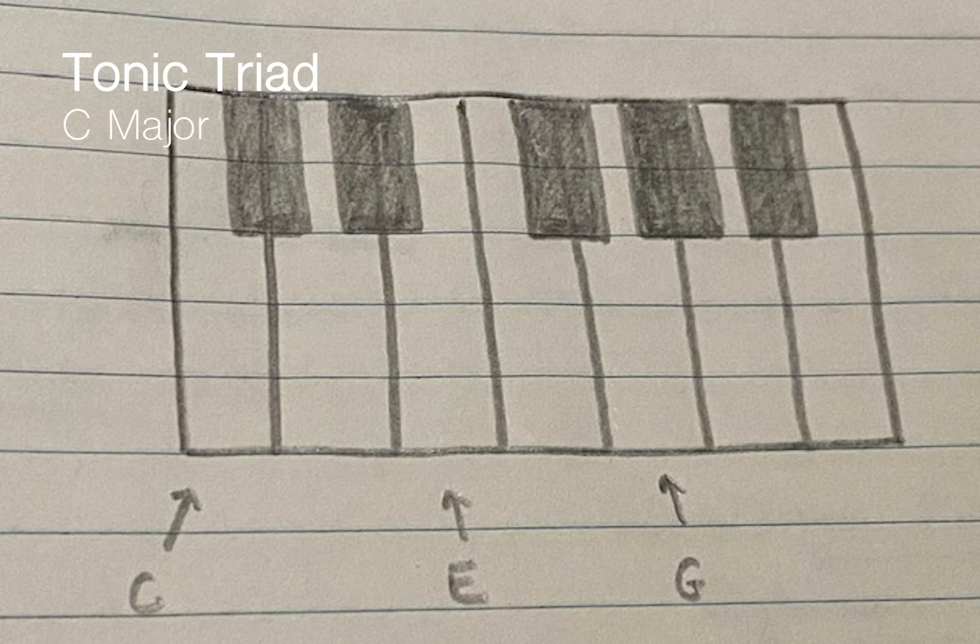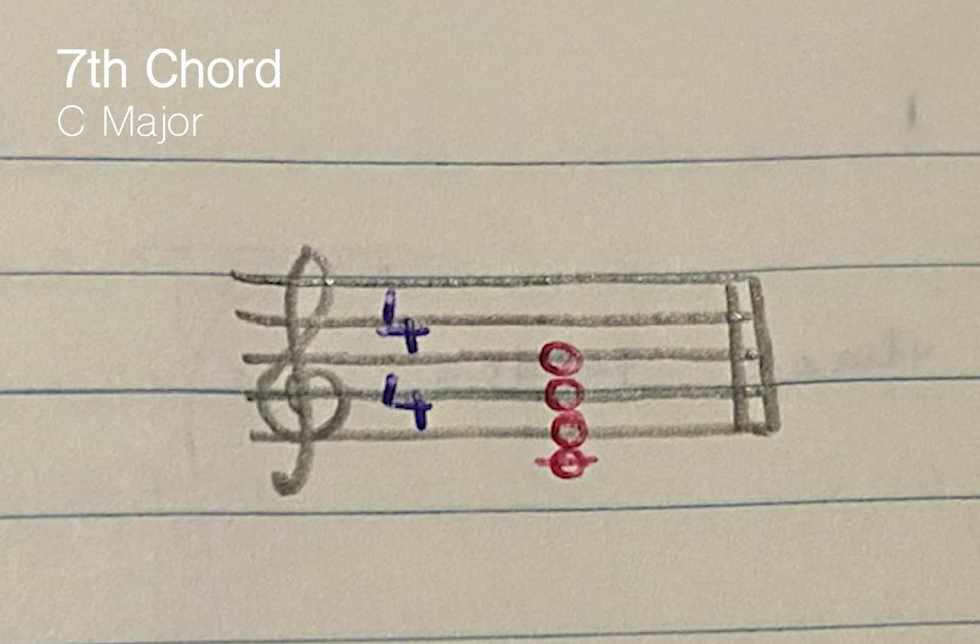Then we'll move on to the C major seventh chord. So the seventh chord is pretty simple. Basically, you just have the tonic triad. So for example, C major key again, the tonic triad of that key will be C, E, and G.